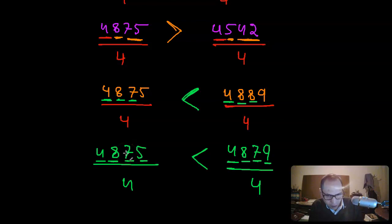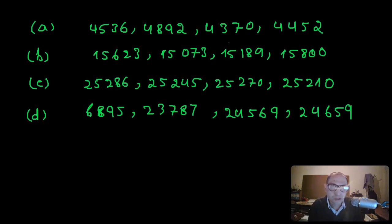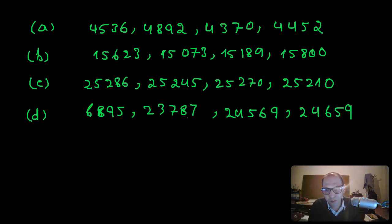That's essentially the idea of comparing numbers — very simple, nothing complicated. I'm going to write a couple of exercises for you to try. In each case — A, B, C, and D — you can specify which number is the largest or which is the smallest. I hope that this video was helpful. I'll see you in the next video. Thank you.